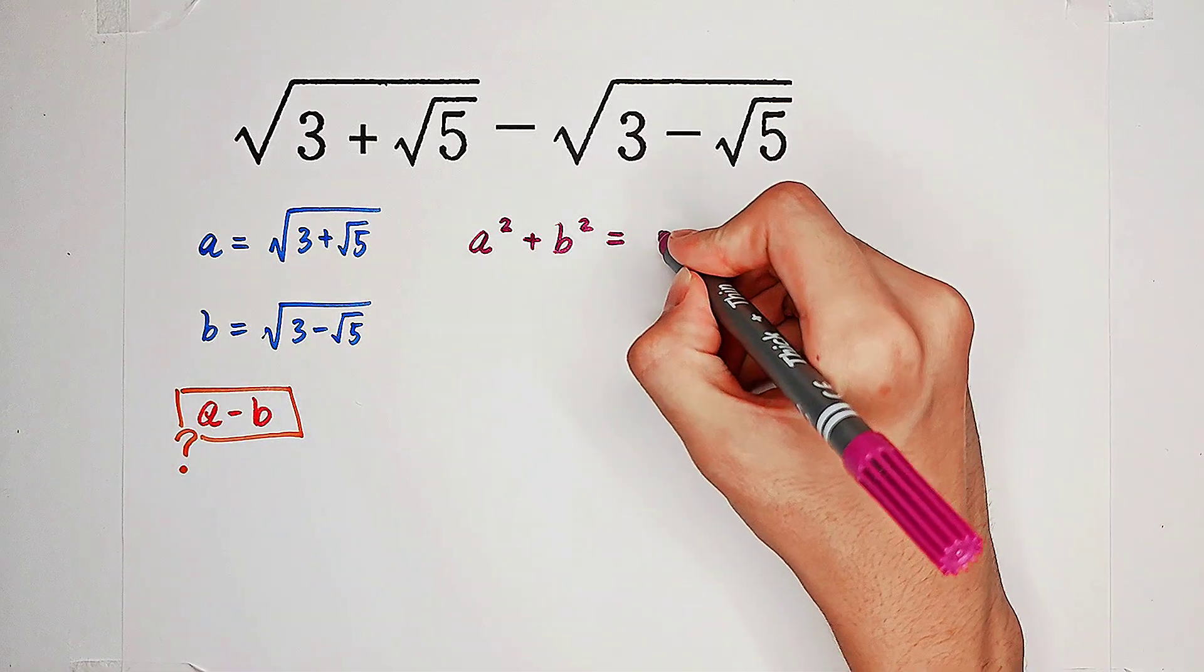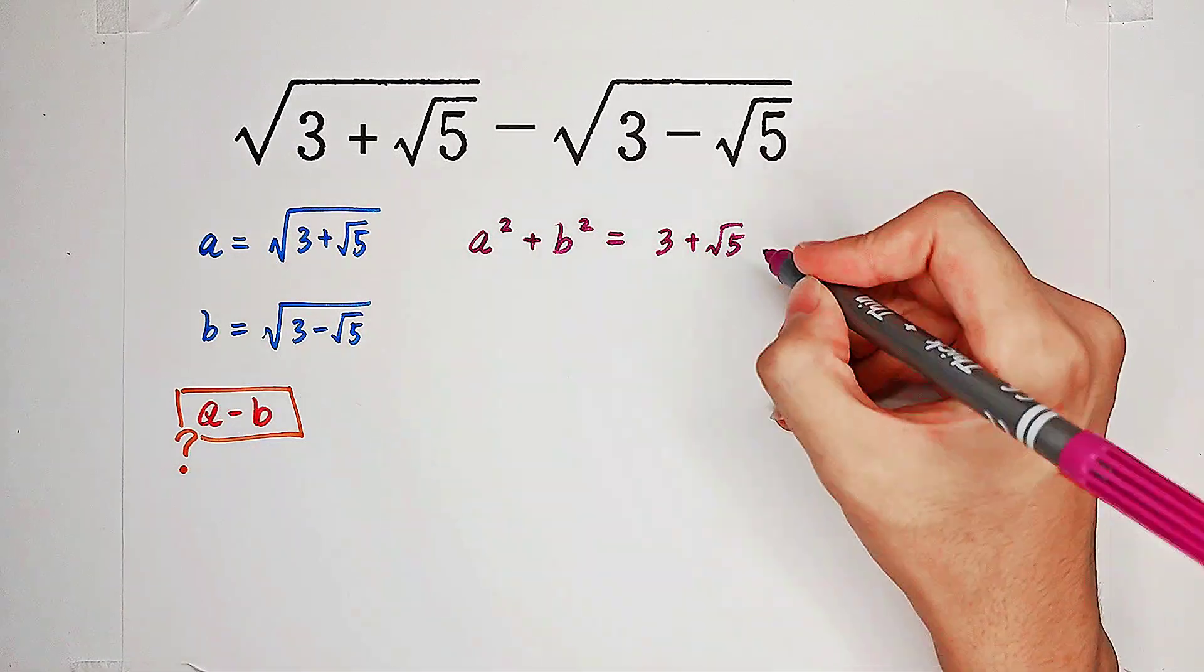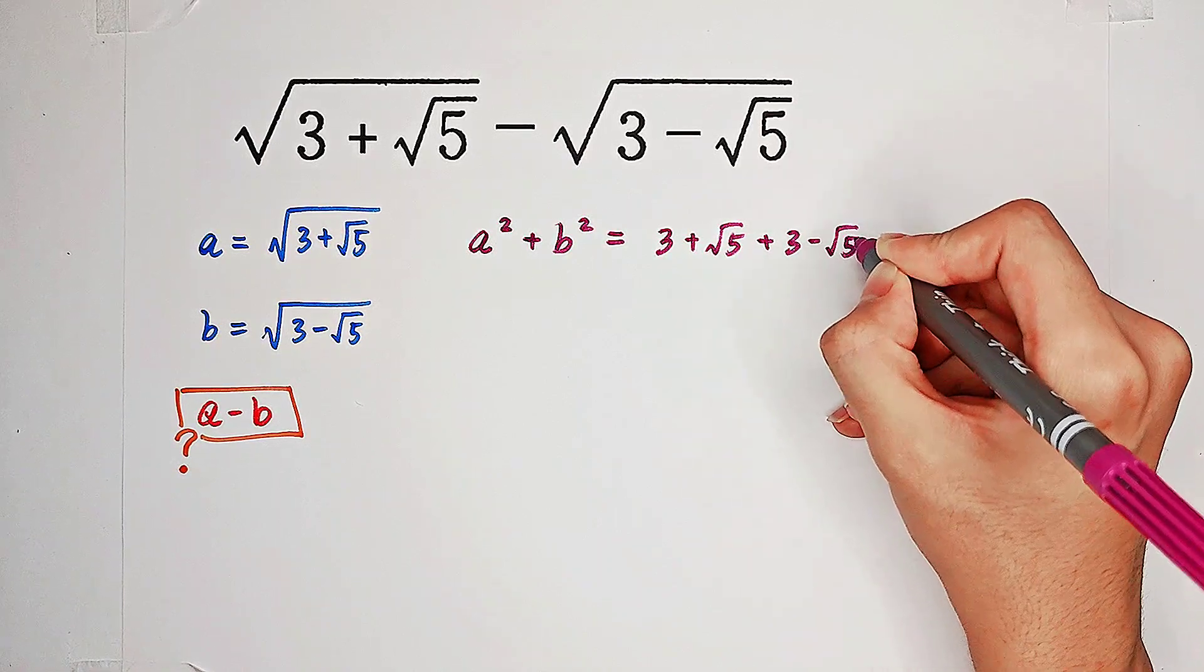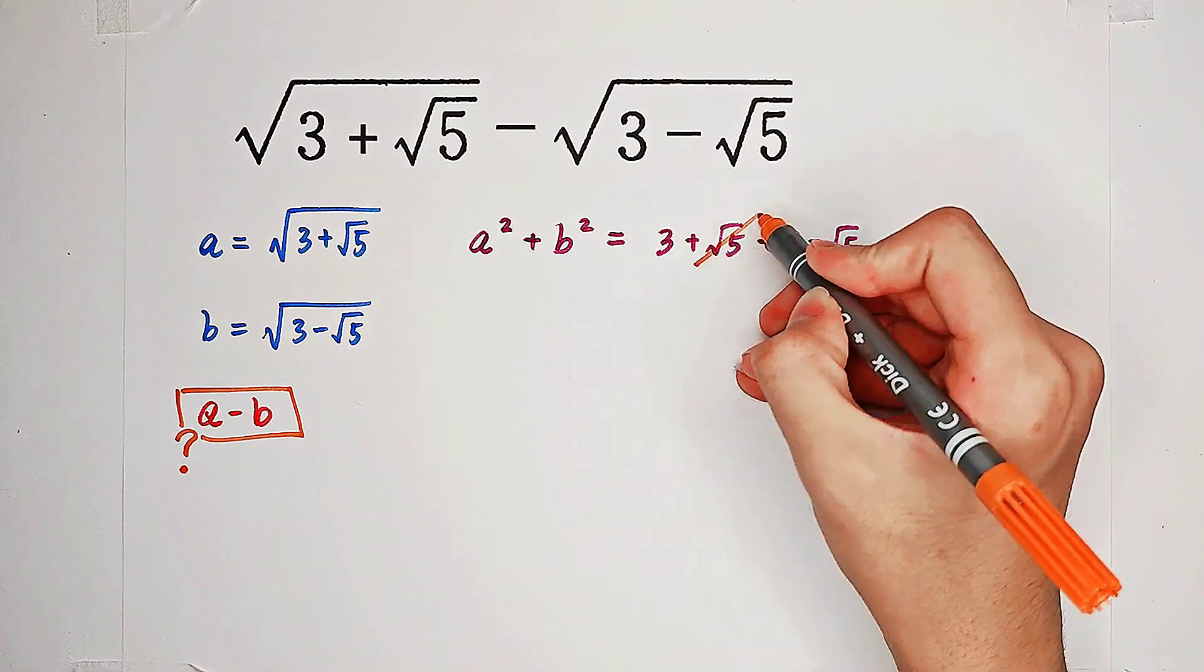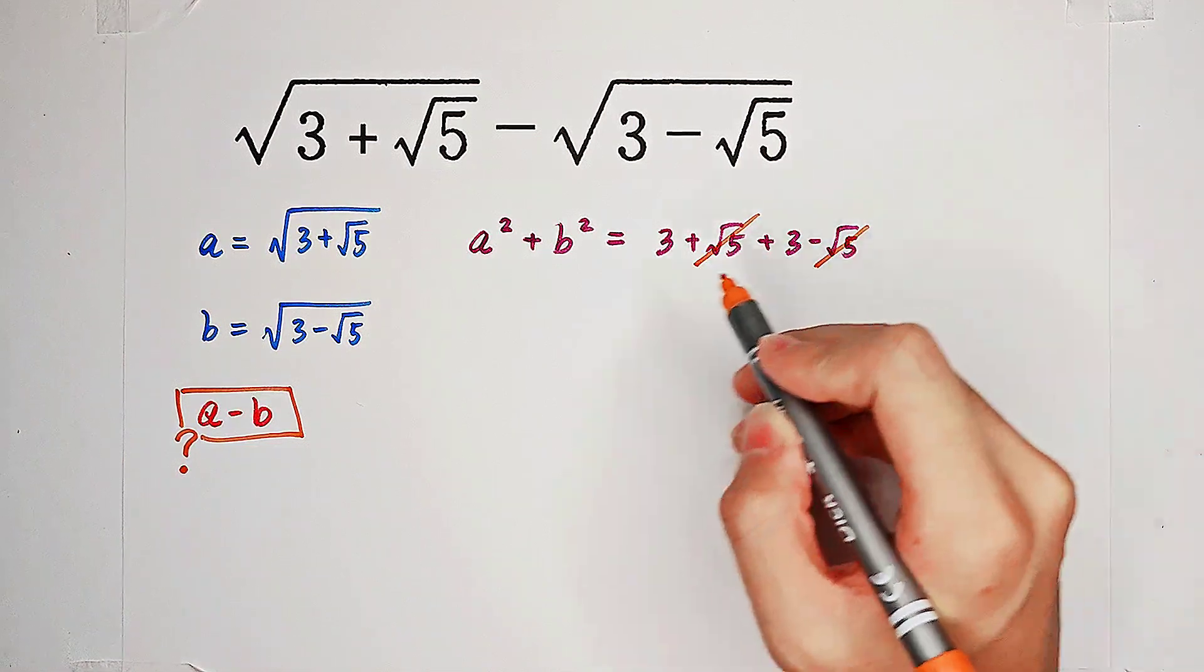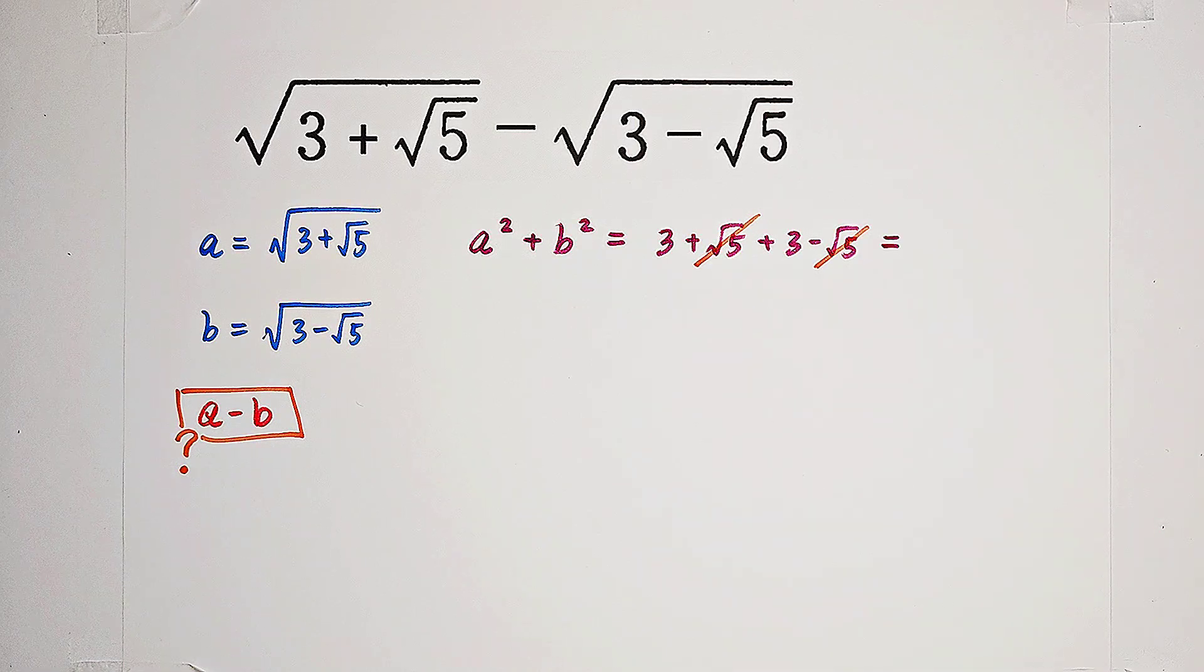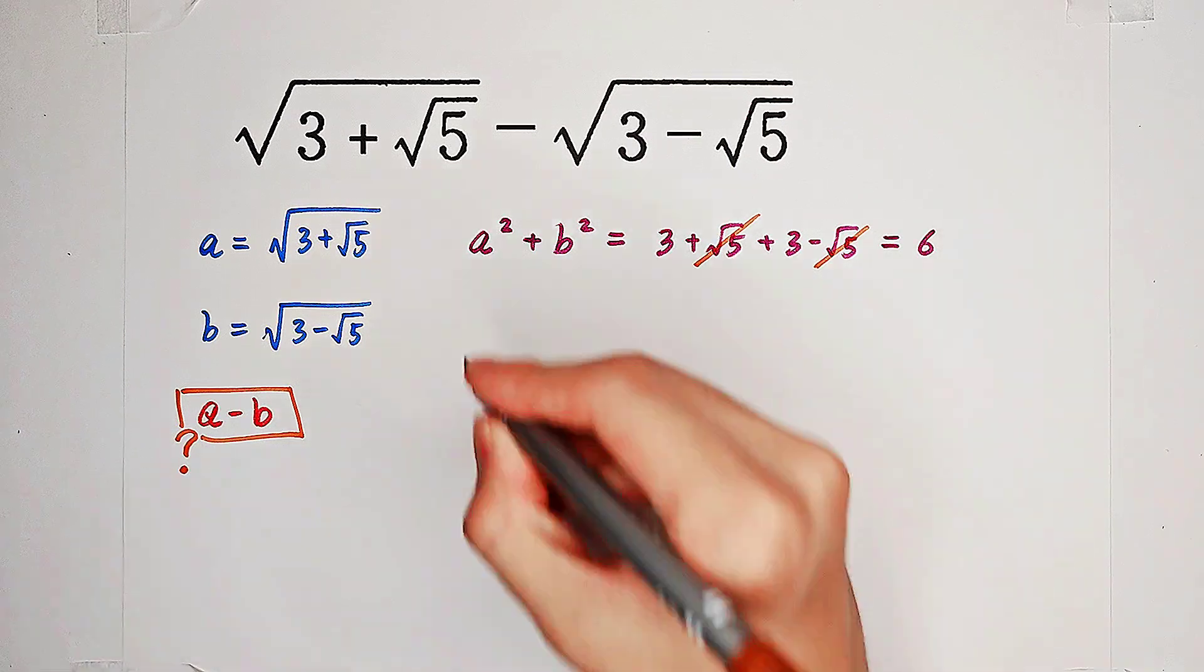a squared is 3 plus square root of 5. b squared is 3 minus square root of 5. And you can see, square root of 5 and square root of 5 can be magically cancelled. So it's just 3 plus 3 is 6.